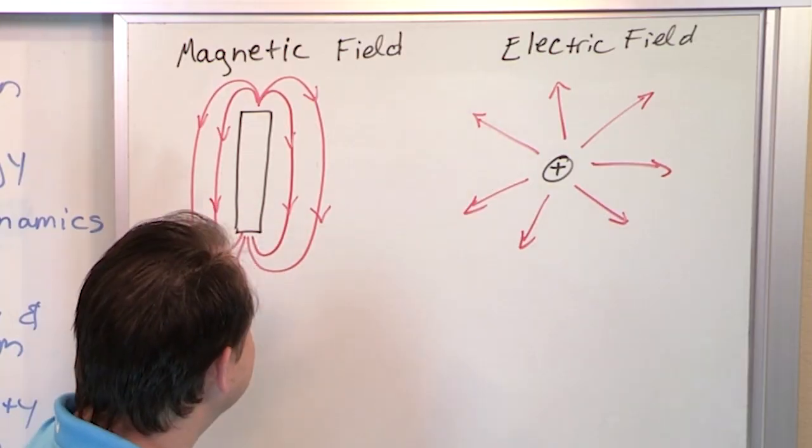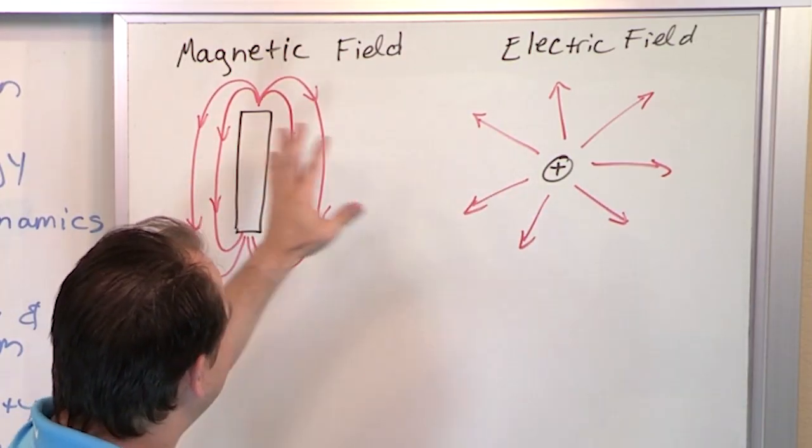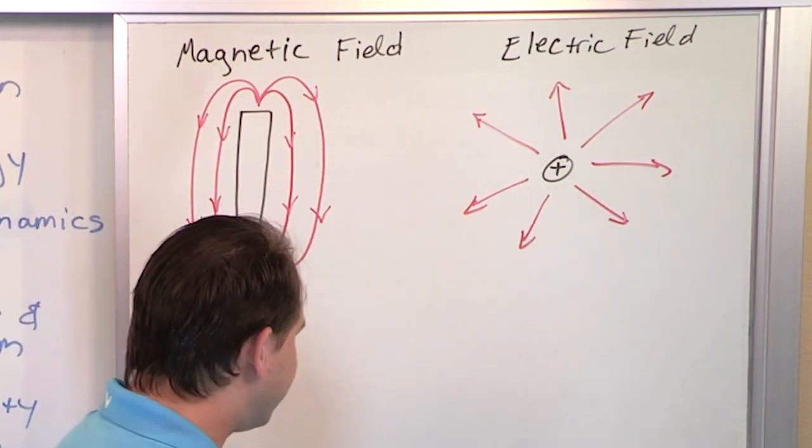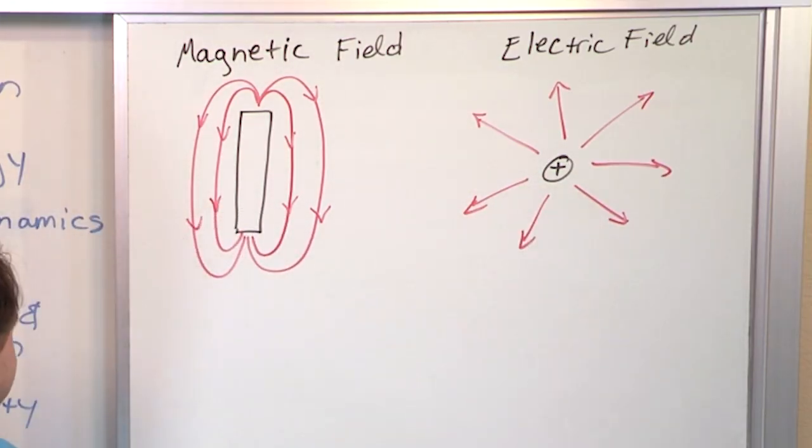And so what we basically say is, you can see there's some similarities here, but there's obvious differences. I mean, these guys form loops, these guys don't form loops. And the other main difference is sort of like how they were discovered to begin with.